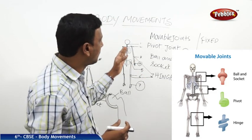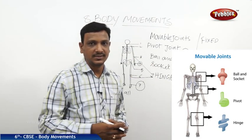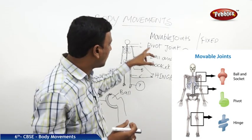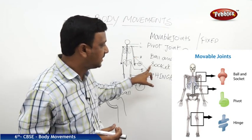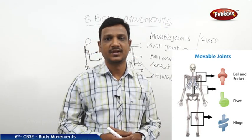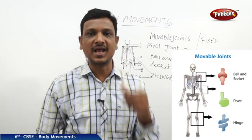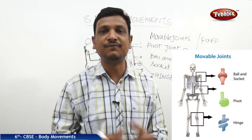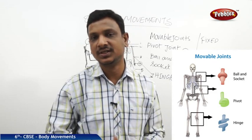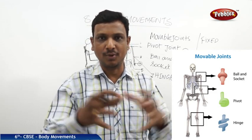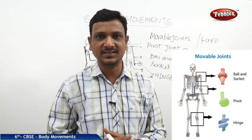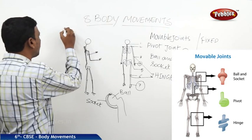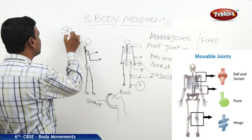So the major movable joints we find in our body are the pivot joint, ball and socket joint, and hinge joint. Joints allow movement, and we find joints between the bones. The collection of bones together is called the skeleton — the framework of our body.